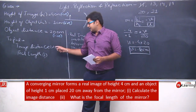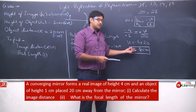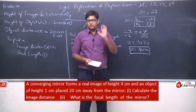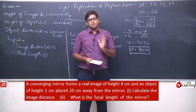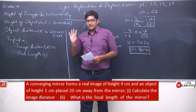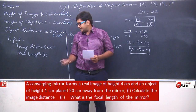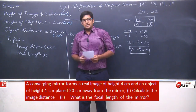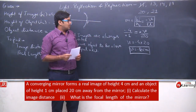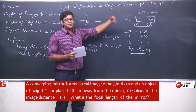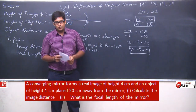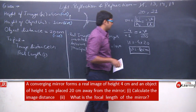We had assumed image distance as positive by default, and after solving, the sign automatically came out negative as −80. To avoid confusion, we will assume the sign as positive and let the answer give the sign automatically. Now we need to find the focal length. Having used the magnification formula, we now apply the mirror formula.